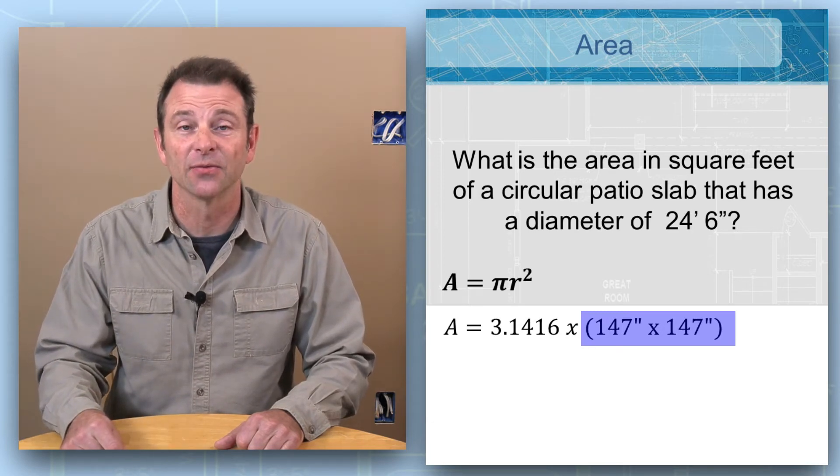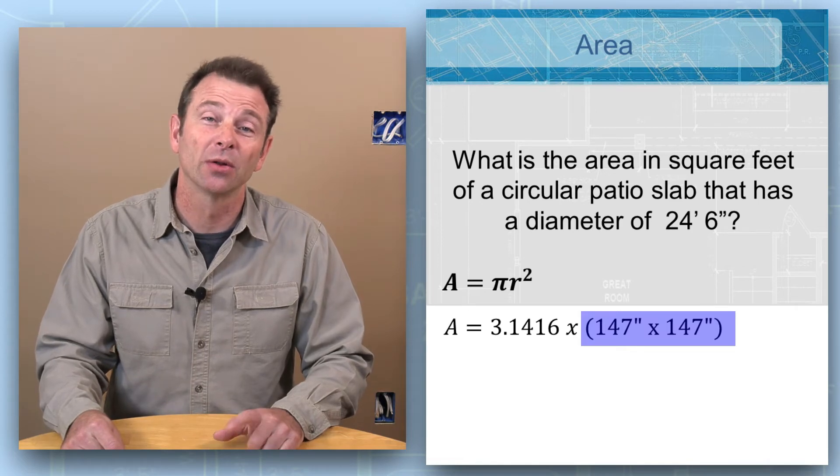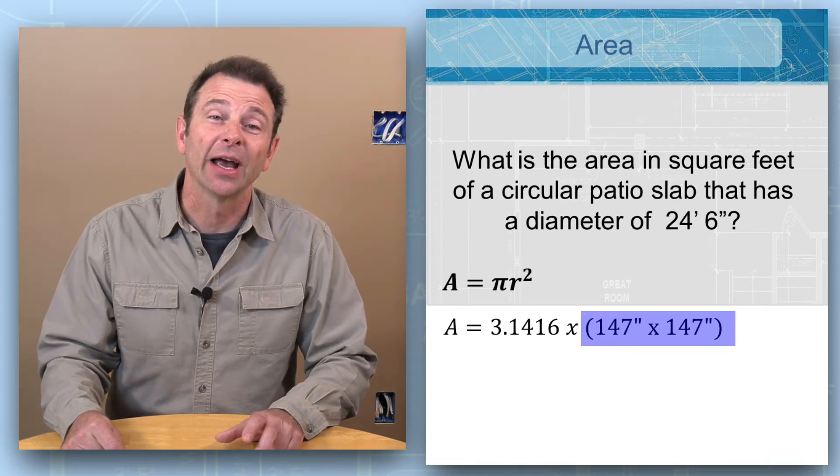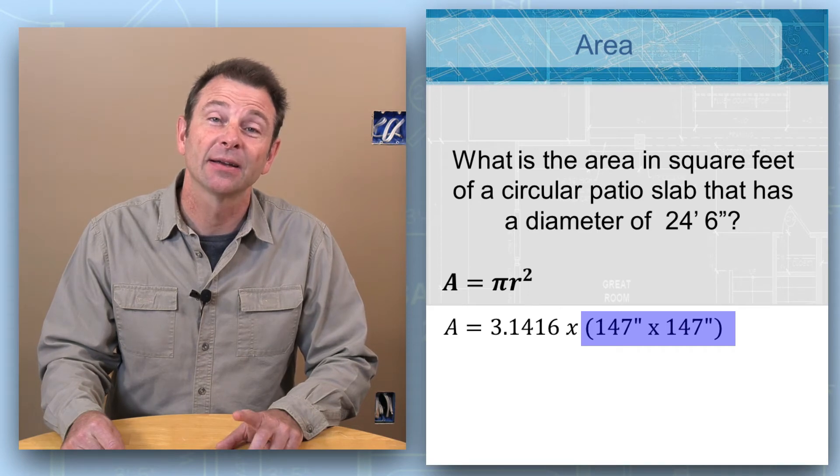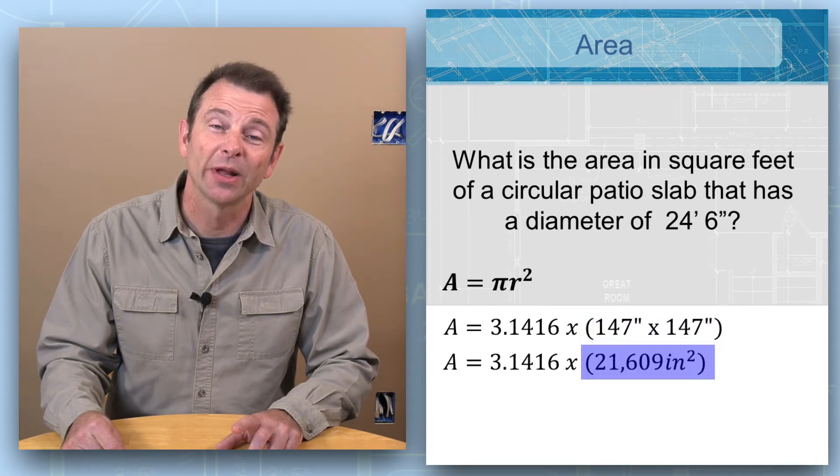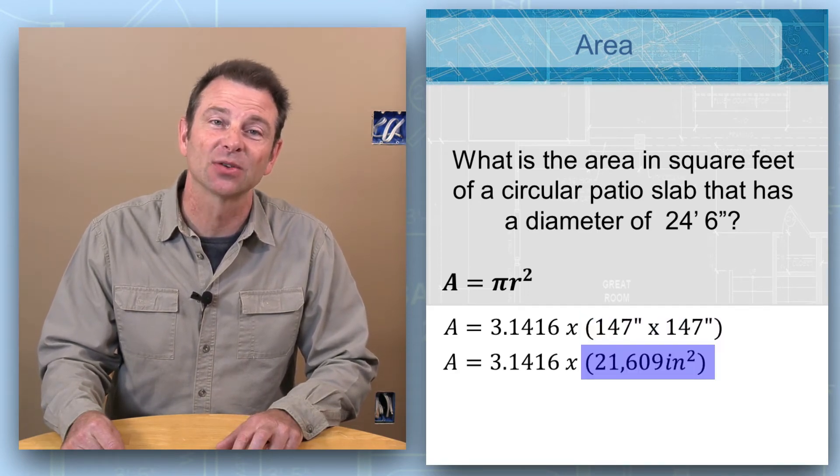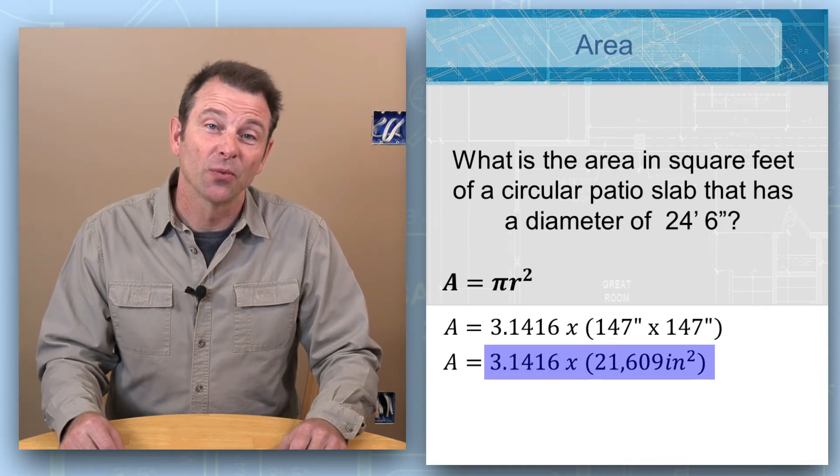So we'll multiply our radius together and we have area equals pi times 21,609 square inches. So pi, which is 3.1416, times 21,609 square inches...